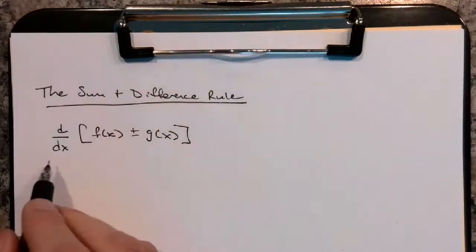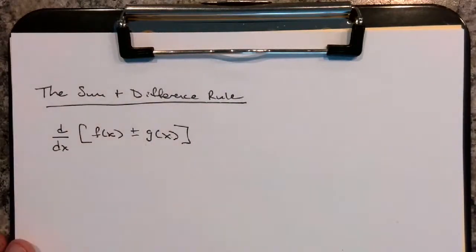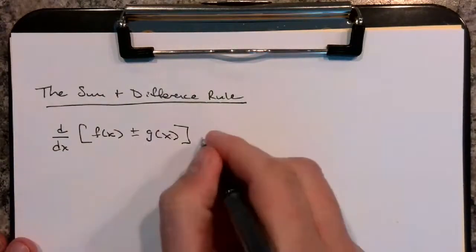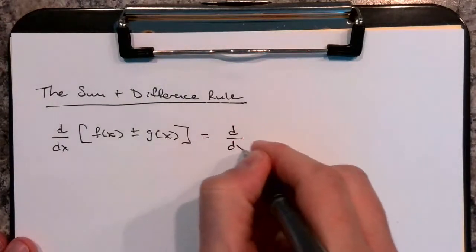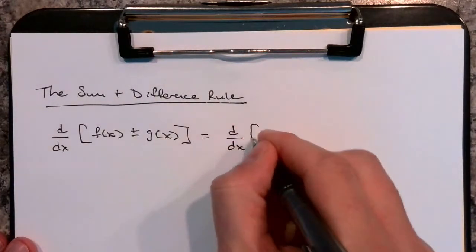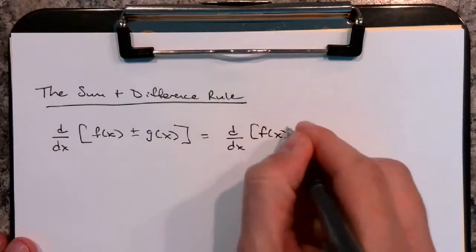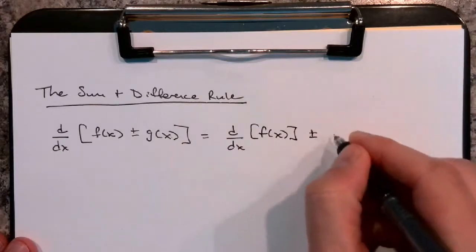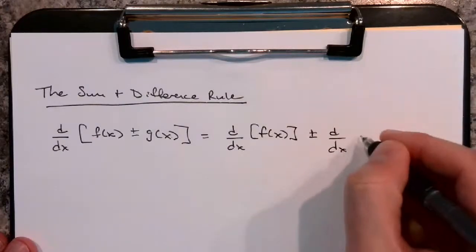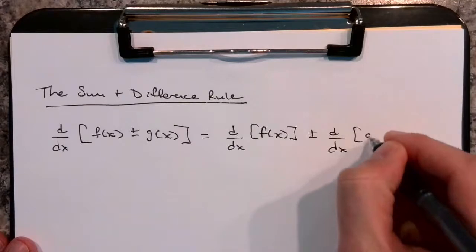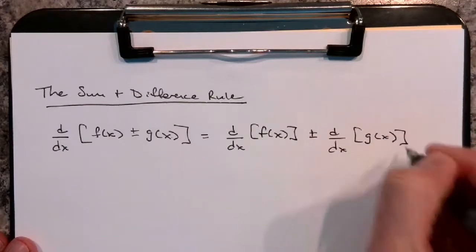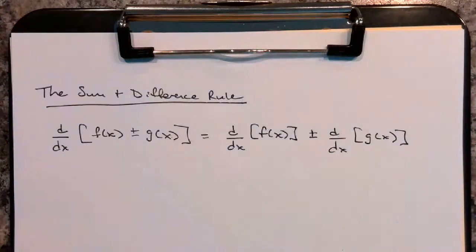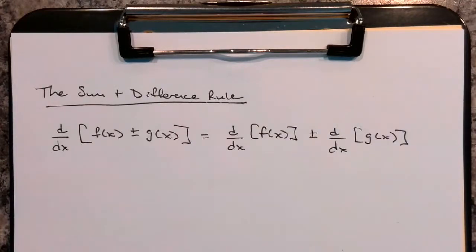if you're taking the derivative of functions being added or subtracted, it's equal to taking the derivative with respect to x of the first function, plus or minus taking the derivative with respect to x of the second function. Basically, you take derivatives term by term.